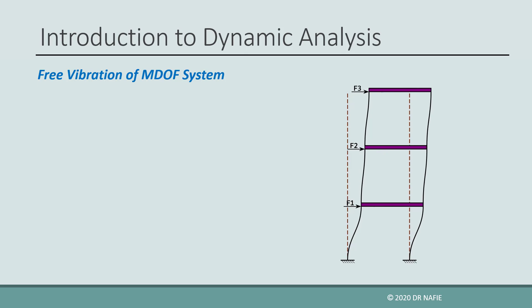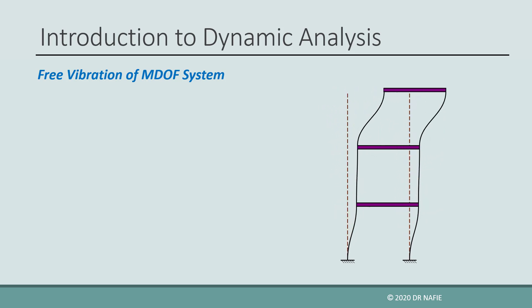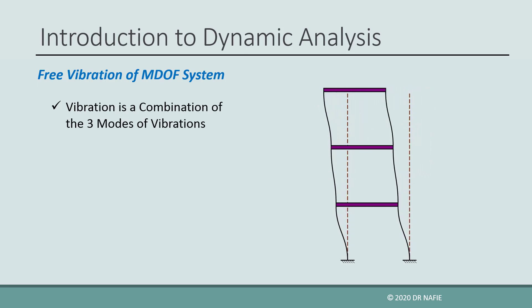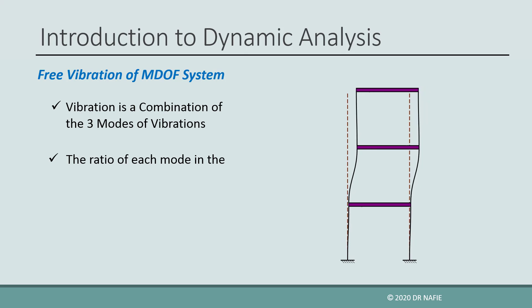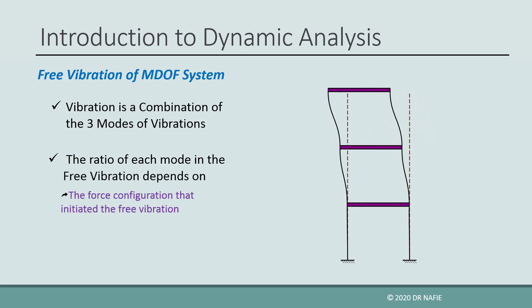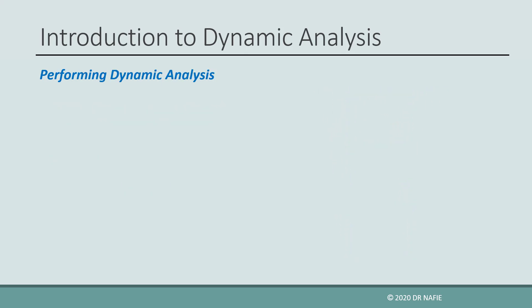If the three-story shear frame is subjected to a system of forces and then the forces are suddenly released, the free vibration of the frame will be a combination of the three natural modes of vibration. The ratio of each mode in the free vibration motion will depend on the force configuration that initiated the free vibration.